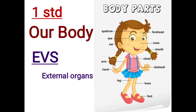These are the body parts. We see the external organs — eyebrow, eye, ear, arm, hand, leg, knee, foot, stomach, chest, mouth, nose, forehead. These are body parts. We will see a description of each.